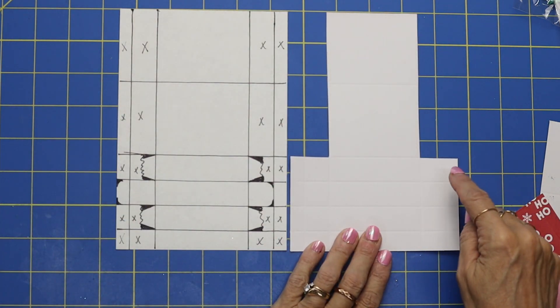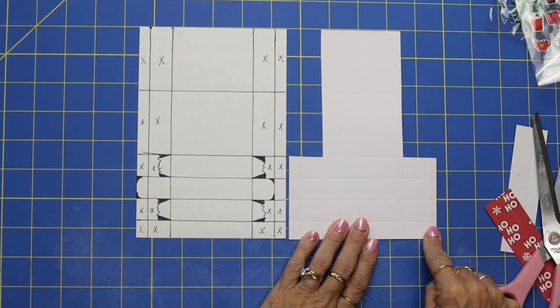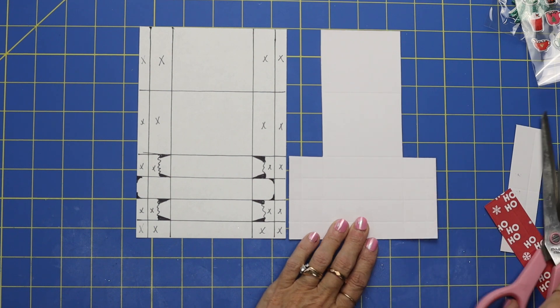Now we're going to cut out this square, this square, and this square. Now this square we're actually not going to cut, we're going to round it. So let me first show you.